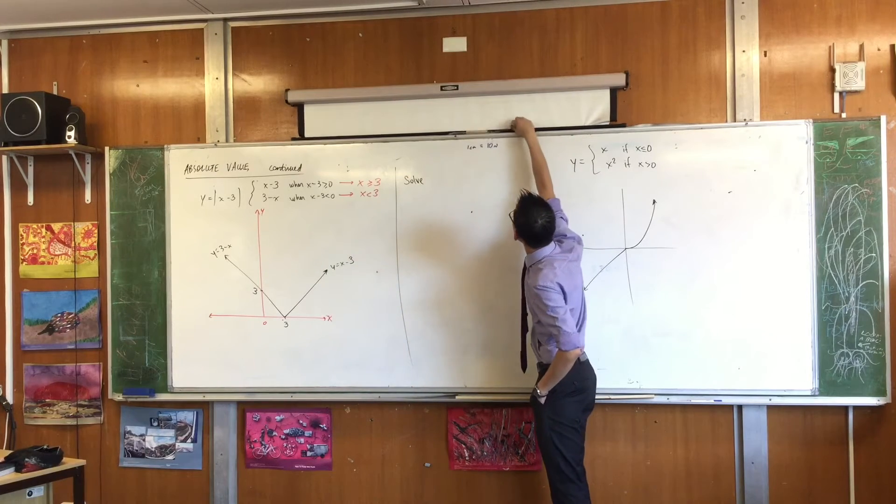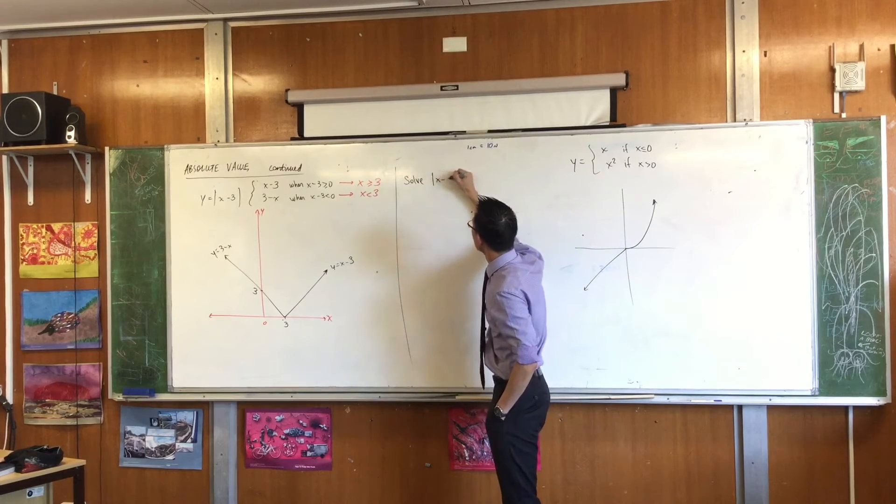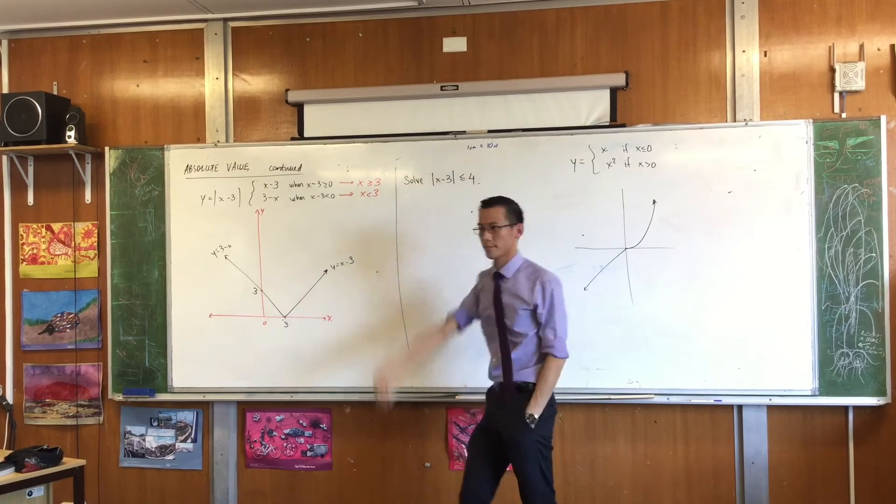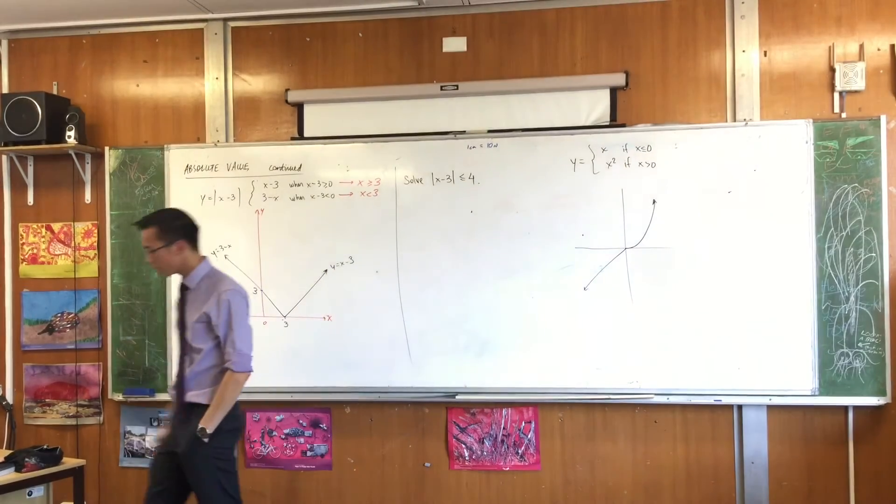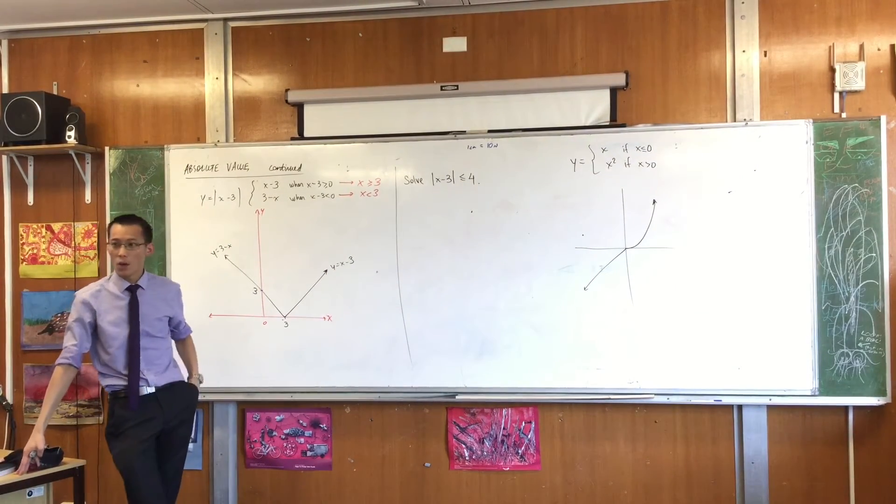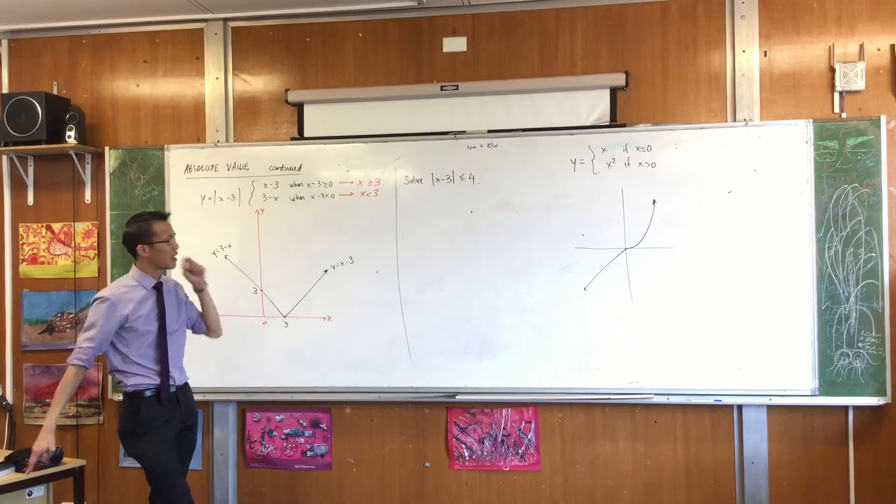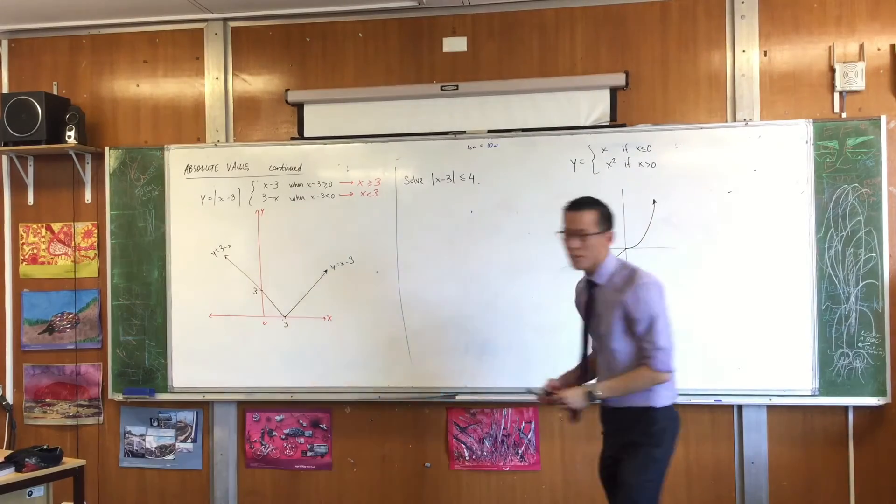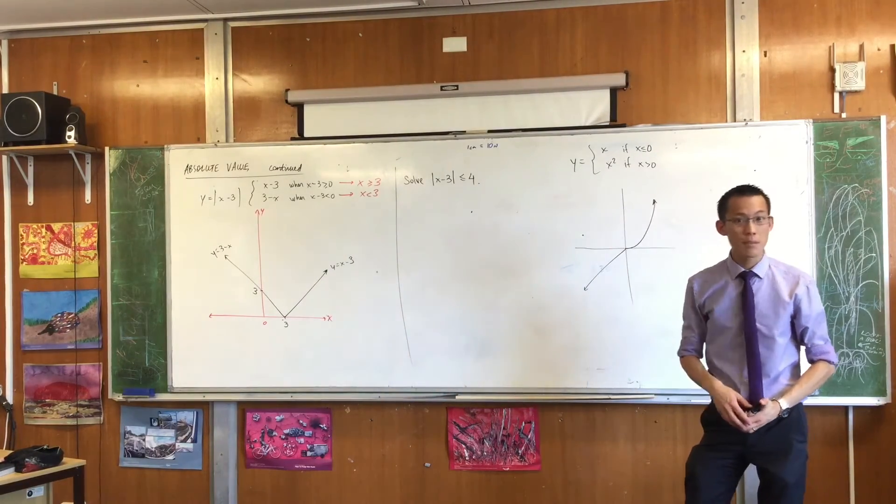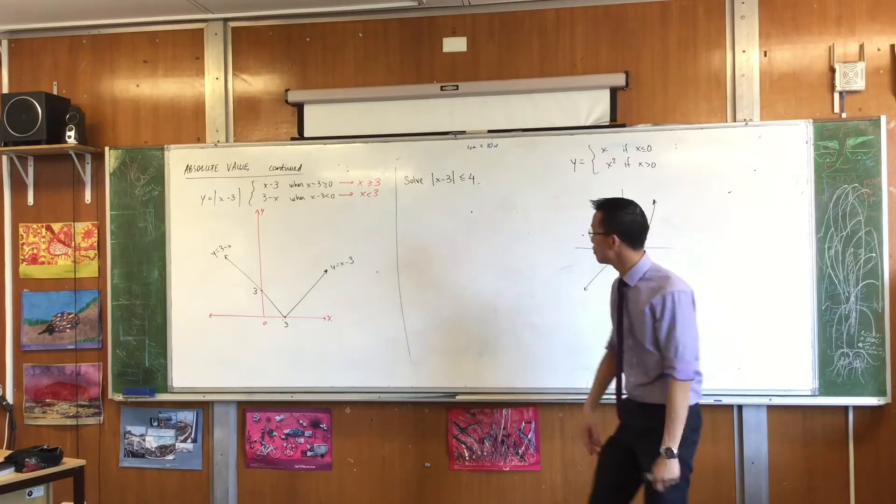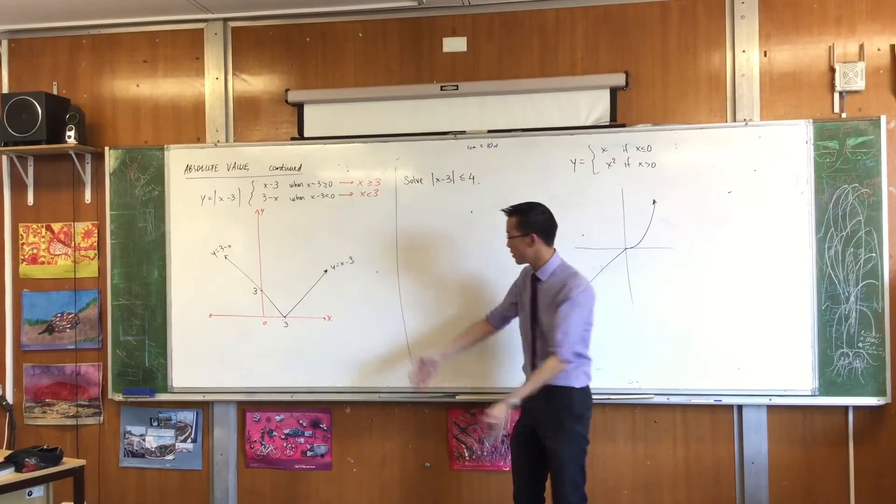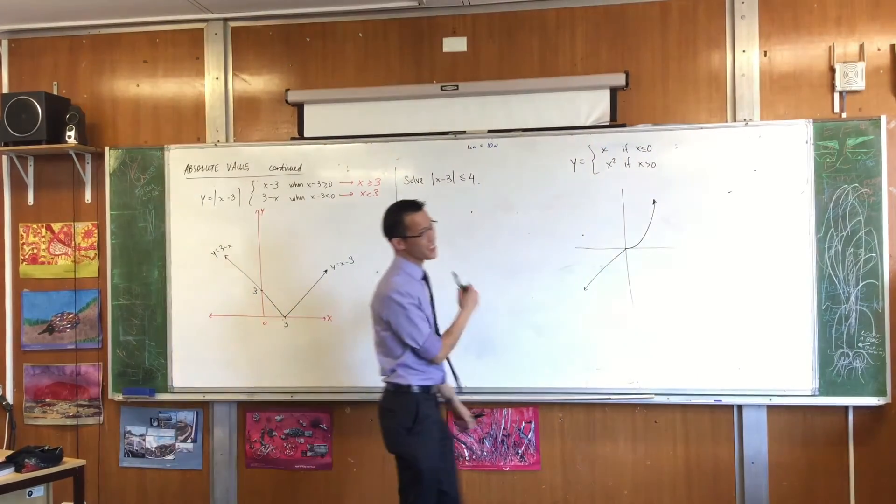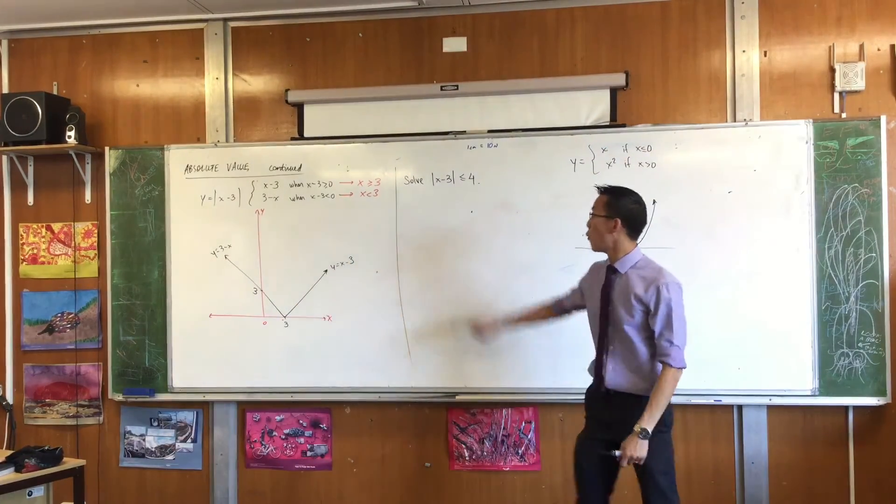So, the absolute value of x minus 3 is, let's do this. Now do you remember when we were looking at solving equations like this, you could deal with it by cases. You can deal with it by cases, that's fine. But if you've got a picture already, you might as well use the picture. So I'm trying to train you, when you read this, to see this.